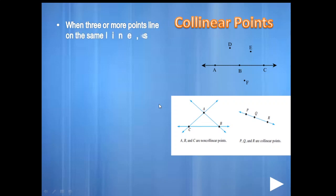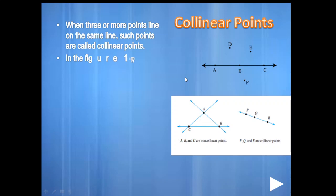When three or more points lie on the same line, such points are called collinear points. In figure one, three points — A, B, C — all lie on the same line, while points D, E, F do not lie on the same line. Hence, A, B, C are collinear points and D, E, F are non-collinear points. In figure two, points P, Q, R are collinear points and points A, B, C are non-collinear points.